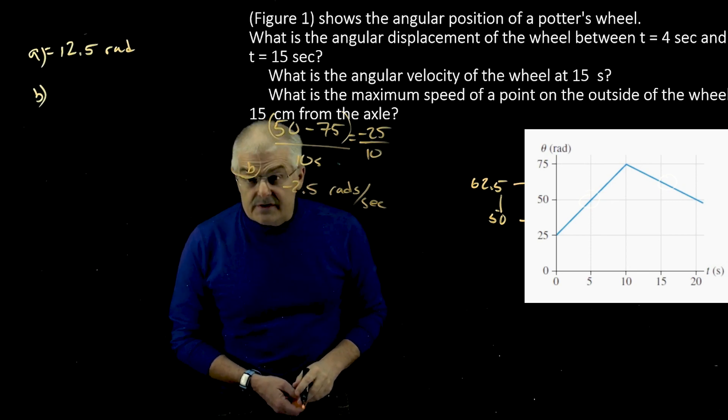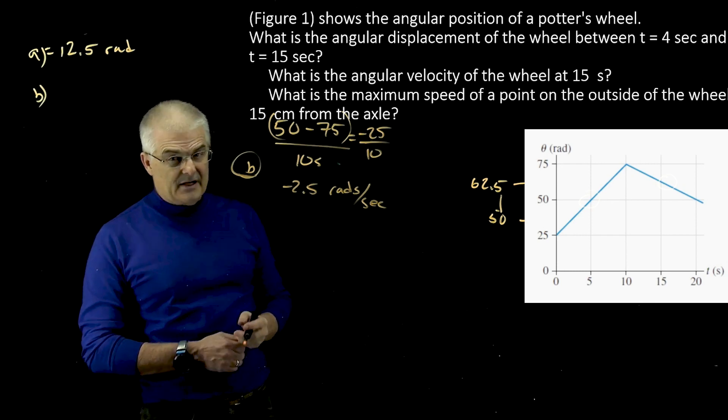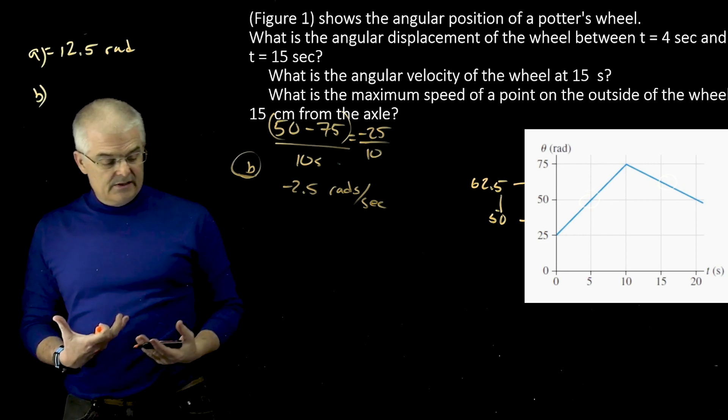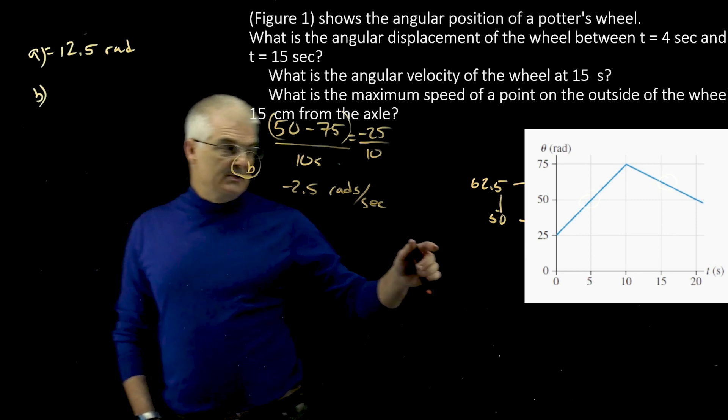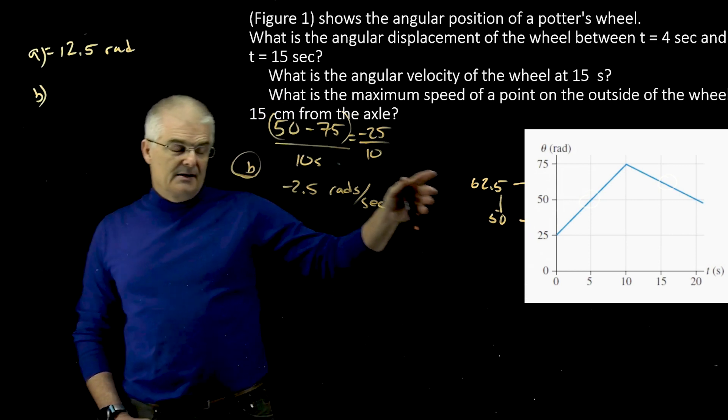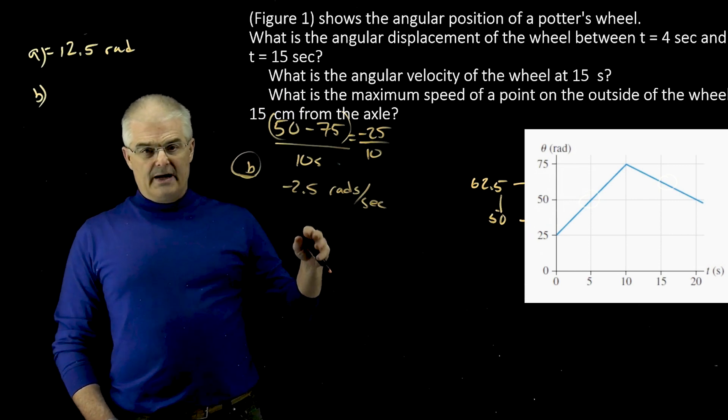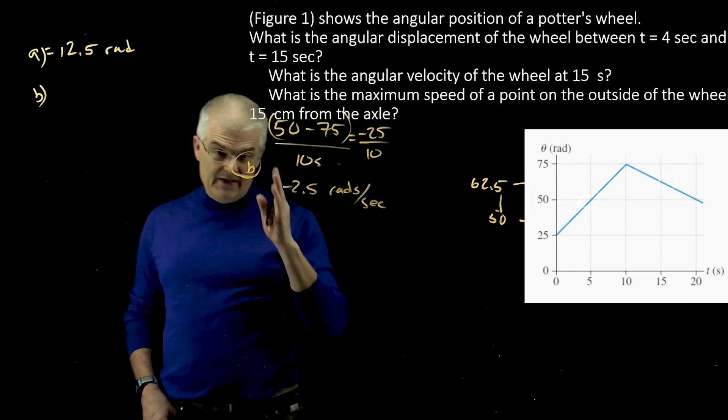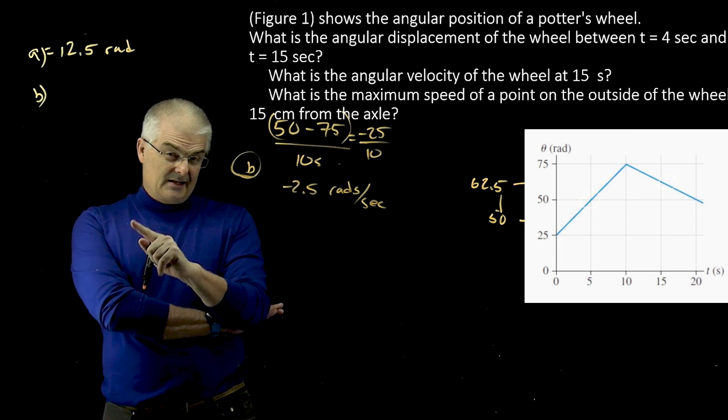And then question C says, what is the maximum speed at a point on the outside of the wheel? Now, speed is like meters per second, and so the maximum speed, if you think about it, if you look at the graph, is actually where the line is steepest. And the line is steepest in that first segment, from 25 rads to 75 rads. So I'm going to find that slope and get it in rads per second, and then convert it.